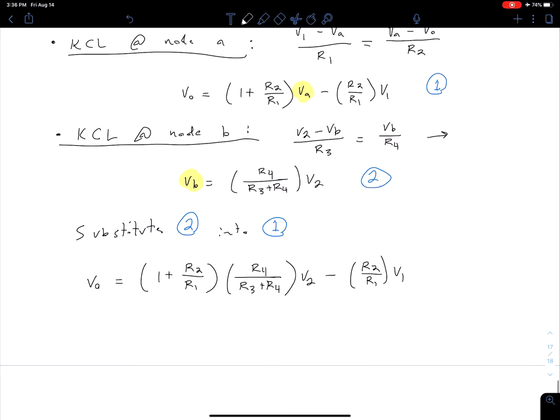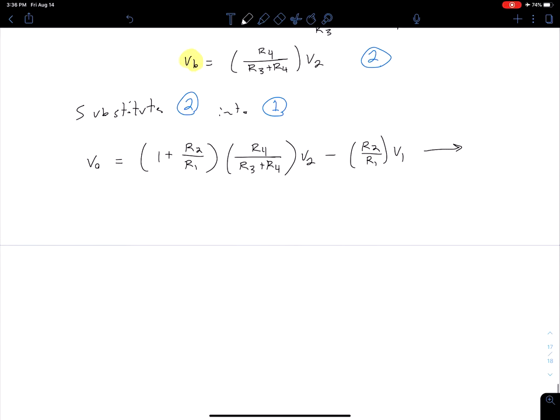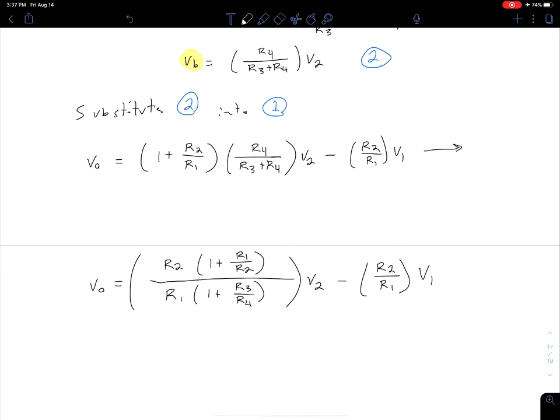Let's rearrange this to make it a little clearer. We're going to do some algebra that I'm not going to show explicitly. If you have questions, of course, let me know. We're going to have this big, messy fraction here, and we're going to see why in a little bit. We're going to have R2 times, in the numerator, 1 plus R1 over R2, and in the denominator, R1 times 1 plus R3 over R4, and all of that multiplied by V2. And then we just still have this minus R2 over R1 times V1.